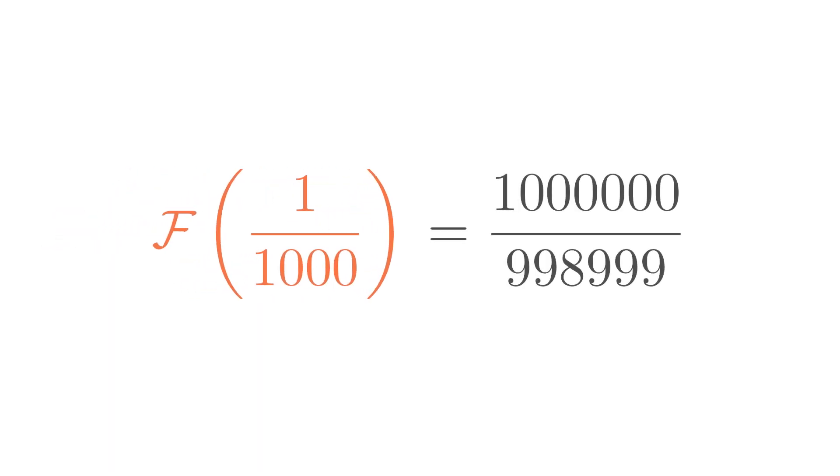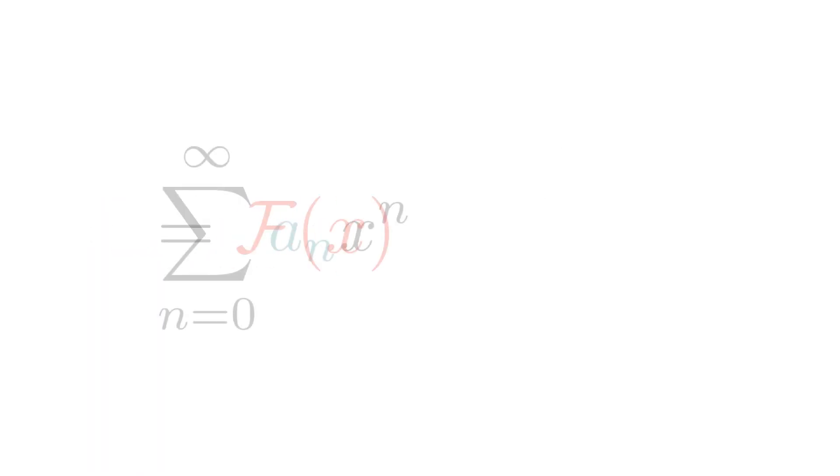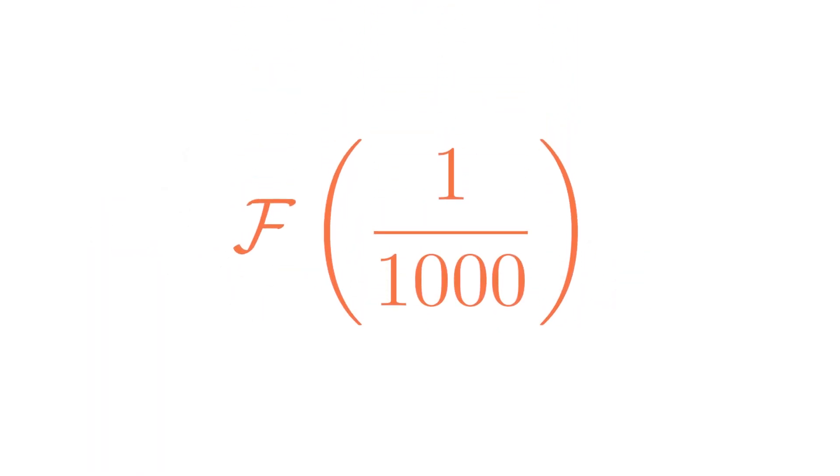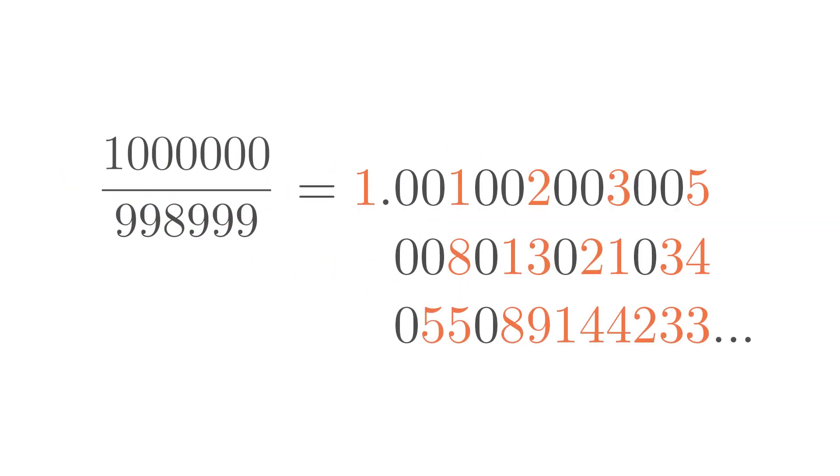And on the other hand, we remember that this function is just a generating function of a Fibonacci sequence. So for x equals 1 over 1000, it must be equal to this. Voila!